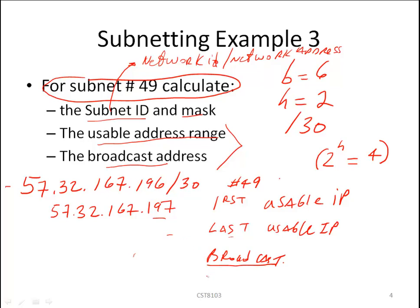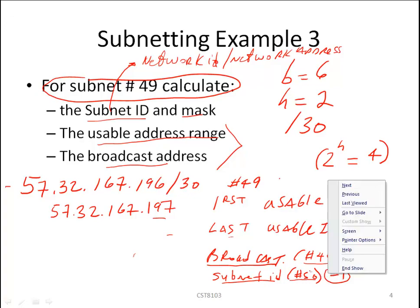Our broadcast address is also, it's also the subnet ID. So our broadcast address for subnet number 49 is the subnet ID or the network ID for subnet number 50 minus one. So the subnet ID for 50 is, 50 times 4 is 200. Therefore 200 minus 1 is exactly 199, and our last usable is always our broadcast minus 1.